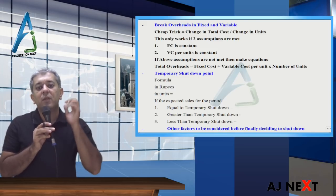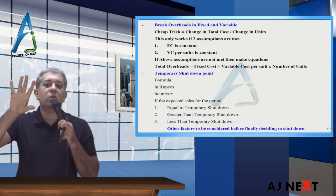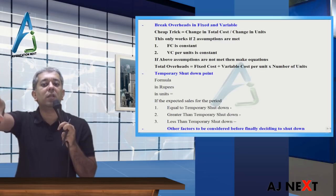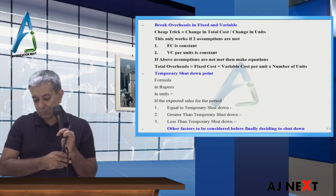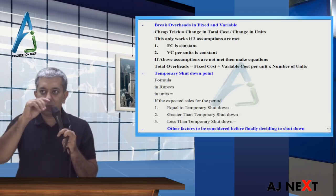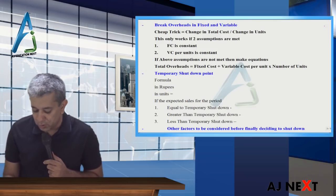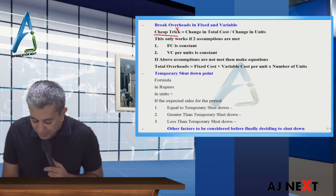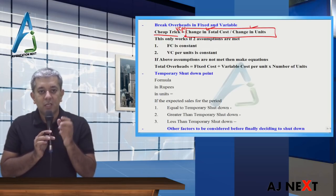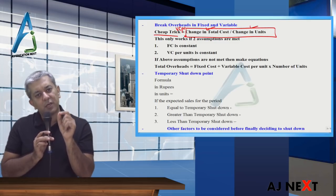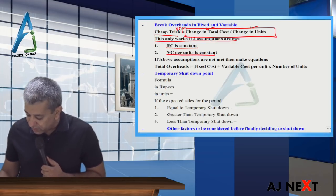Breaking overheads into fixed and variable components is becoming quite common in exams. For example, electricity cost has a fixed portion and a variable portion, and the question may give you the combined total. Since there are only two types of costs — fixed and variable — if fixed cost remains constant as a lump sum and variable cost per unit remains constant, you can use a cheap trick: change in total cost divided by change in units to find variable cost per unit. Then substitute back to find the fixed portion.